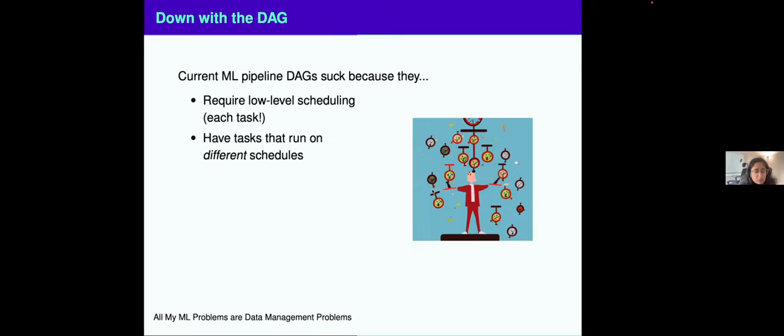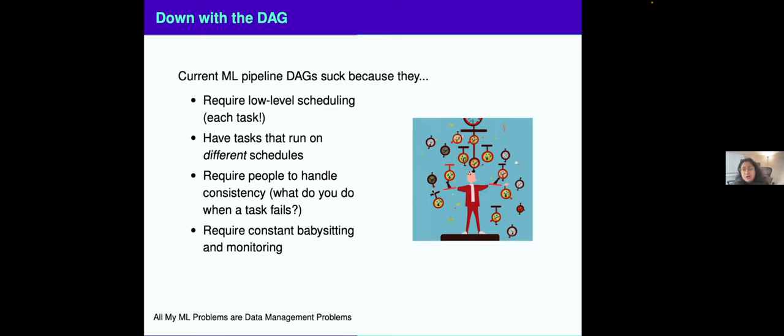When you have these low level DAG requirements, people now have to handle consistency on their own. What do you do when a task fails? What do you do when someone changes the code? Do you go and backfill old outputs? All of these questions now come up. And especially when you have rotating ML engineers, that's an incredible amount of knowledge that you need to share just to make sure that this works. It requires constant, constant babysitting and monitoring, which absolutely no one wants to do.